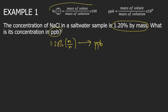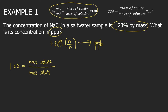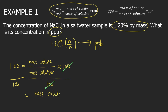First, you will use the formula for percent by mass. According to the formula, mass percent — so 1.20 — is equal to mass of solute divided by mass of solution, times 100. What you can do is divide both sides by 100. So on the right side, 100 will cancel, leaving mass of solute divided by mass of solution. And on the left side, you have 1.20 divided by 100, which equals 0.012.